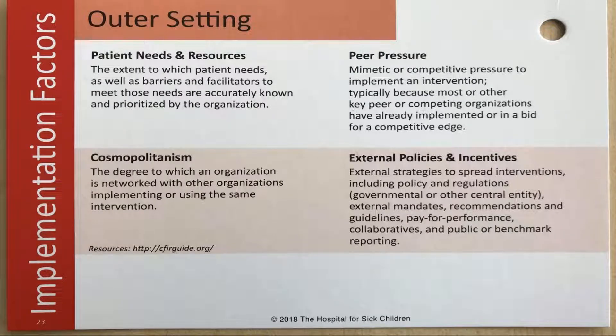In the outer setting, patient needs and resources refers to the extent to which patient needs as well as barriers and facilitators to meet those needs are accurately known and prioritized by the organization. Cosmopolitanism is the degree to which an organization is networked with other organizations implementing or using the same intervention. Peer pressure refers to mimetic or competitive pressure to implement an intervention, typically because most or other key peer or competing organizations have already implemented or in a bid for competitive edge. External policies and incentives include external strategies to spread interventions, including policy and regulations, governmental mandates, recommendations and guidelines, pay for performance, collaboratives, and public or benchmark reporting.